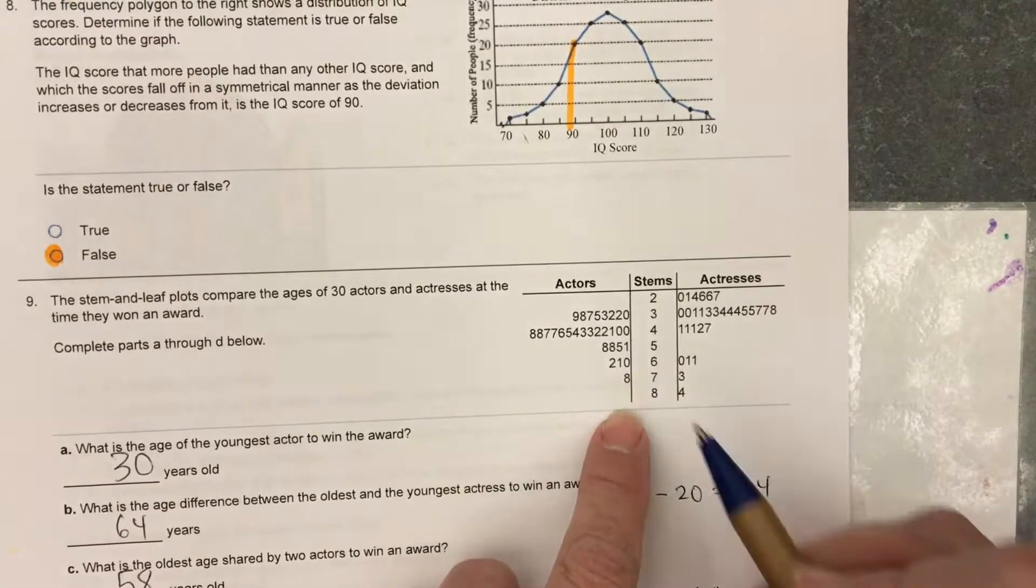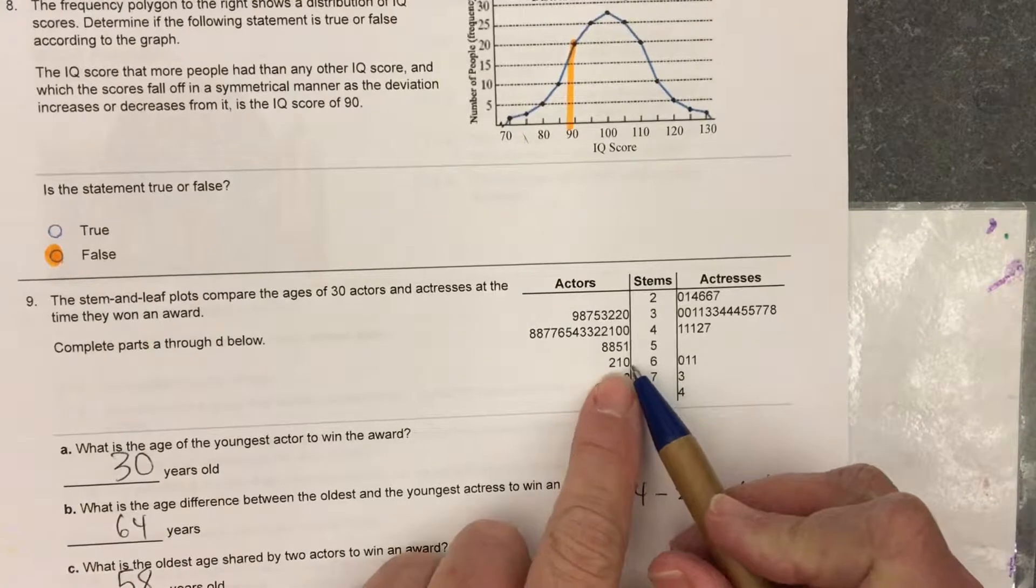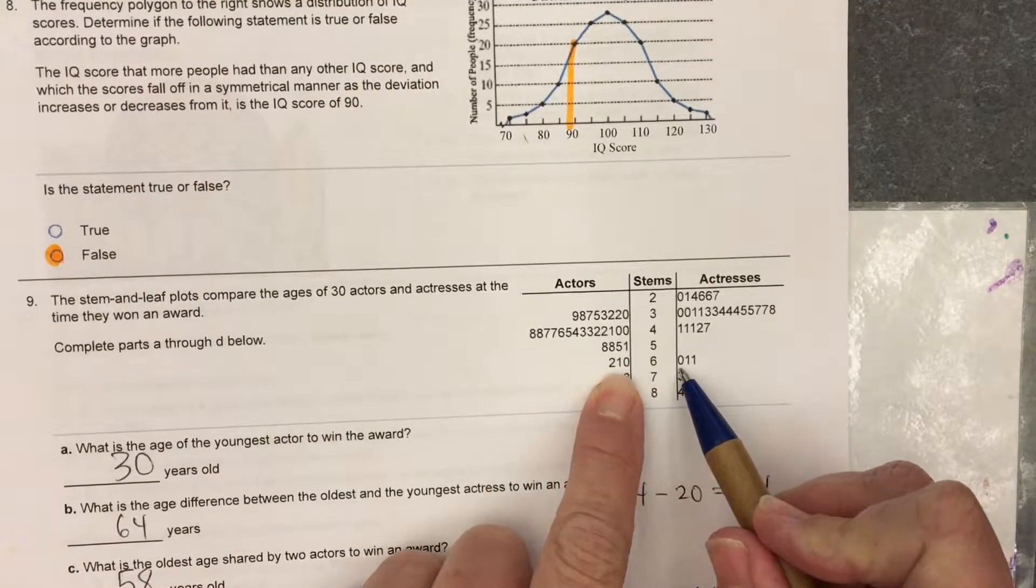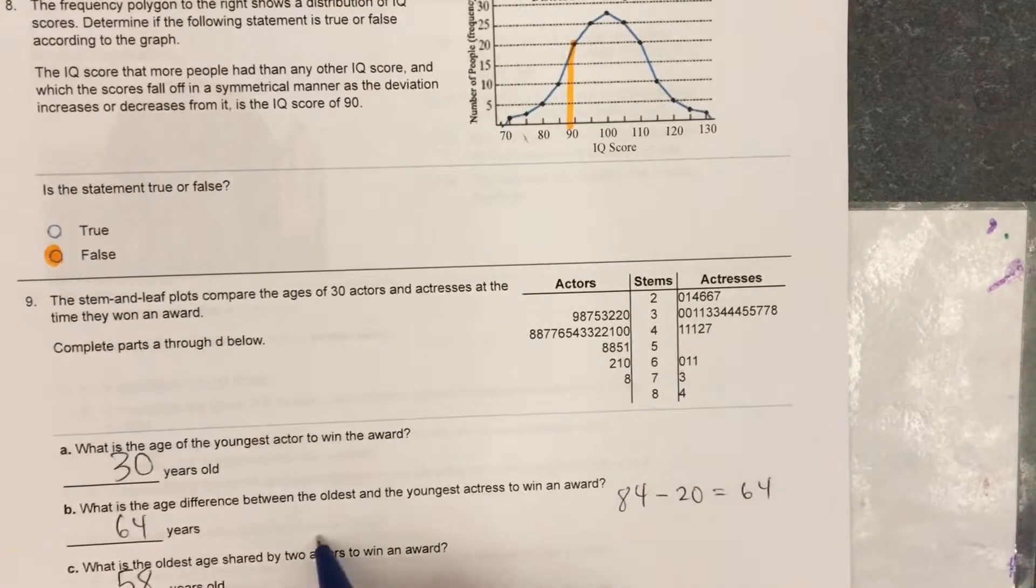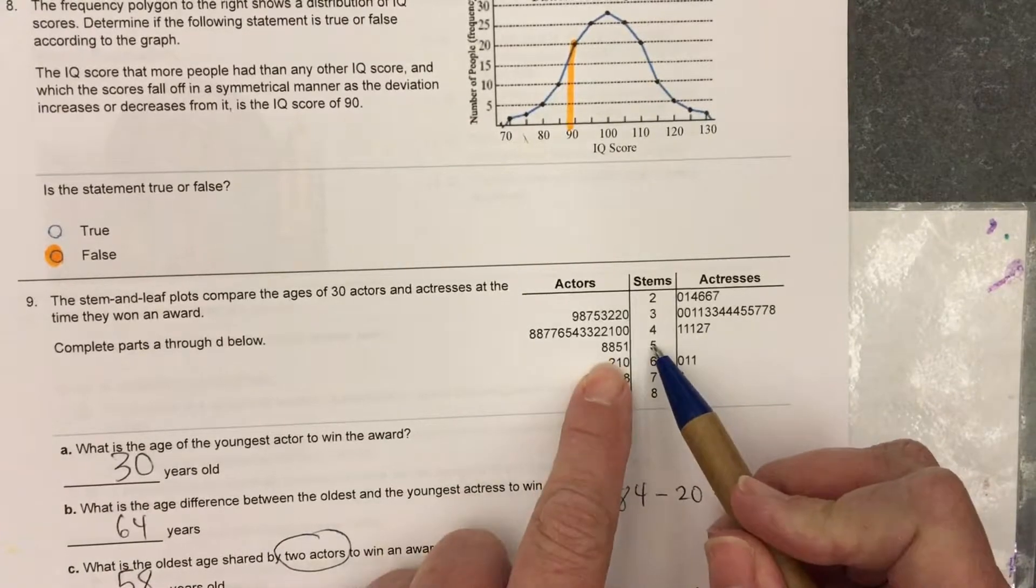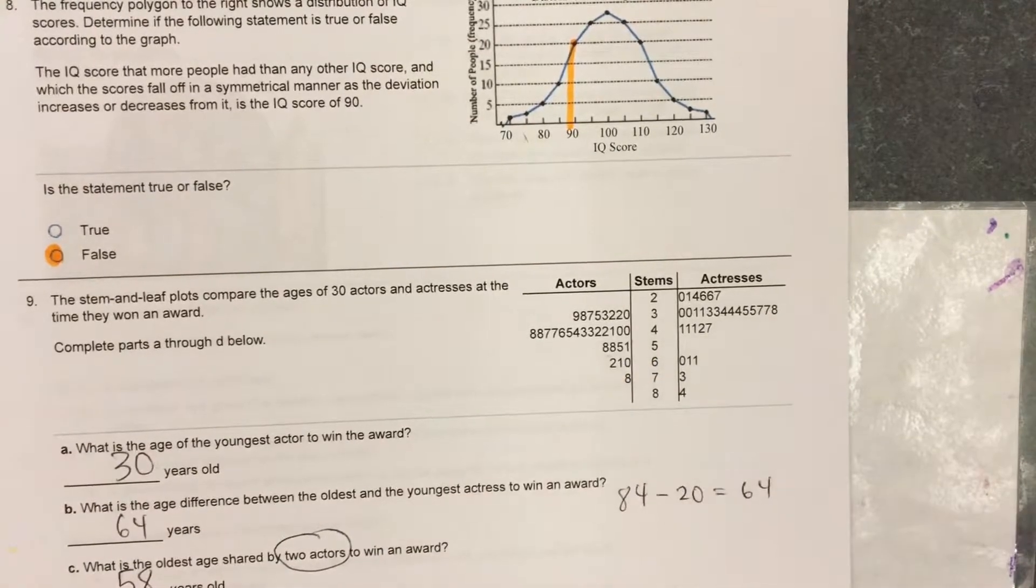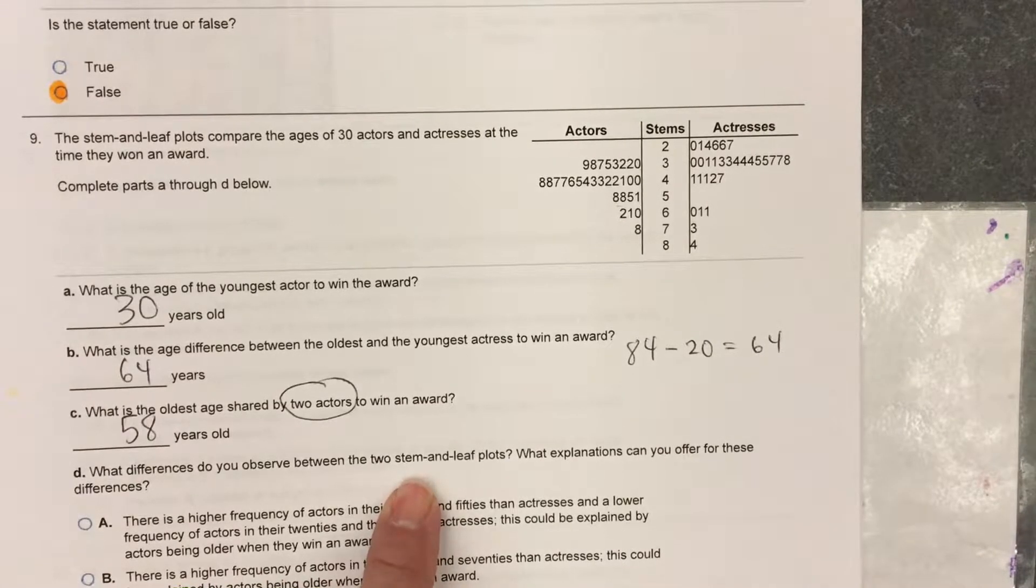60. Well, thank you for that comment. I have 60 on actor and I have 60 on actress. But the question said two actors. So we're not looking at the actresses. And that's 58.